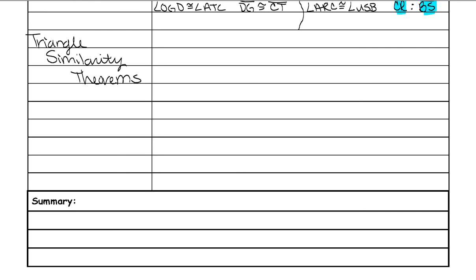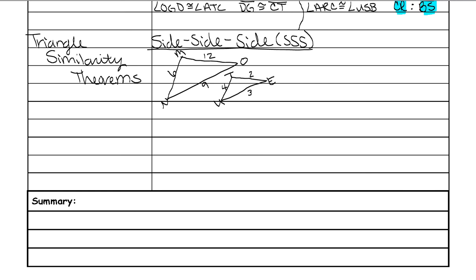The first theorem we're going to talk about has the same name as a congruent triangle theorem, but the way you prove it is different. We're going to talk about side-side-side similarity. Here's an example problem. You're given a side, a side, and another side, so it is obviously going to be side-side-side.